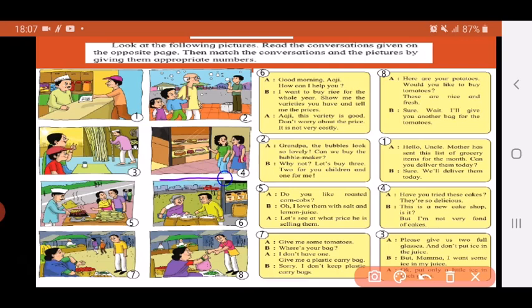In picture four you can see two ladies passing by a cake shop. So let's read this conversation box. The first lady says, Have you tried these cakes? They are so delicious. Delicious means tasty. The second lady replies, This is a new cake shop, is it? But I'm not very fond of cakes. So here you can put number four in this box.